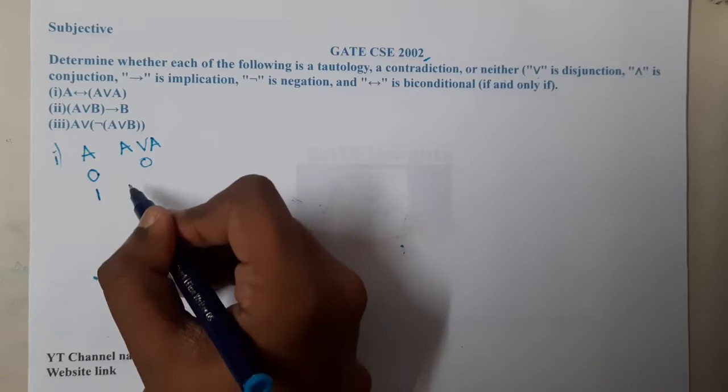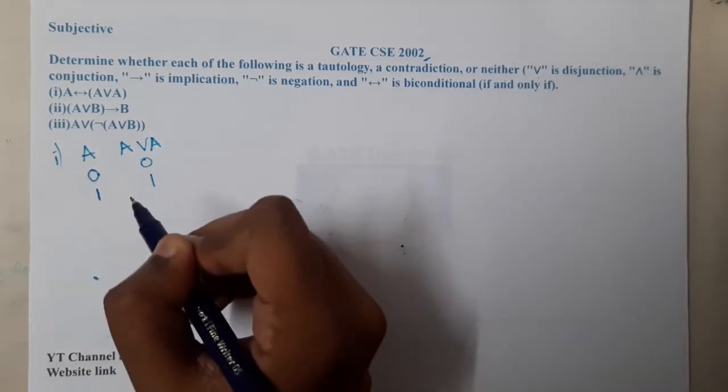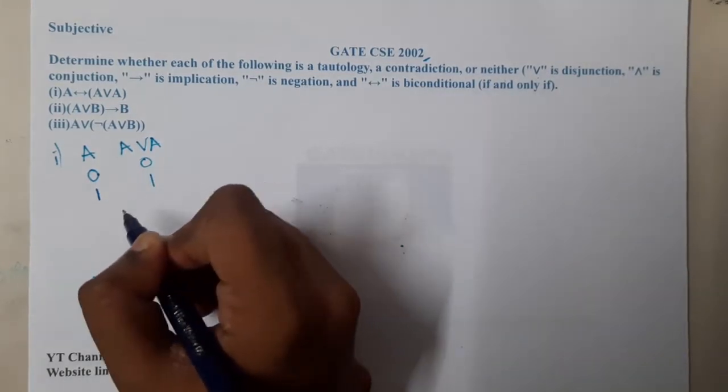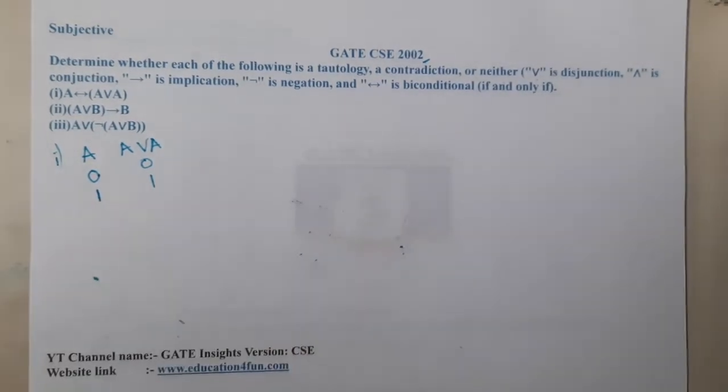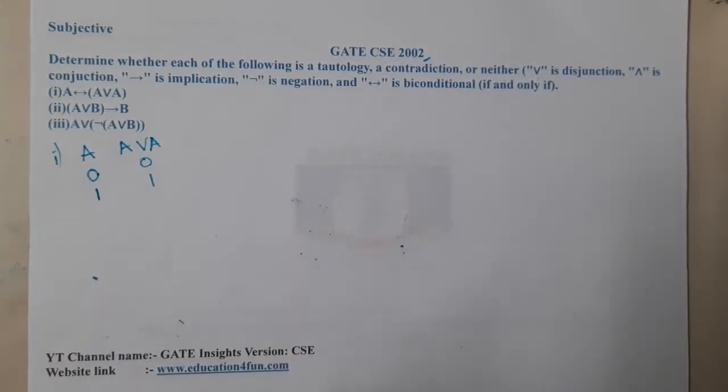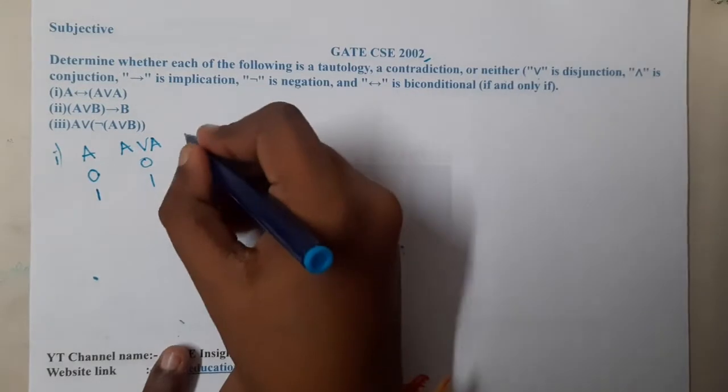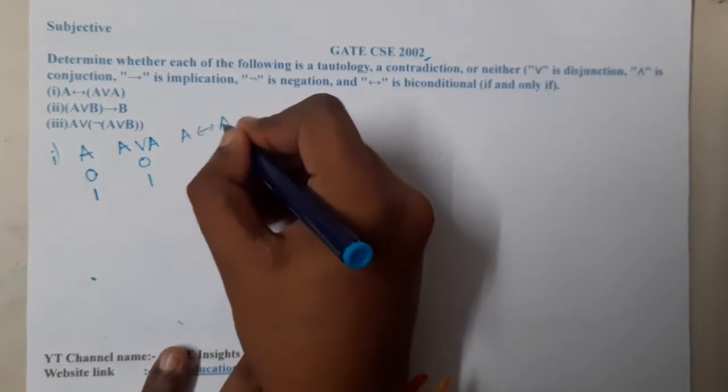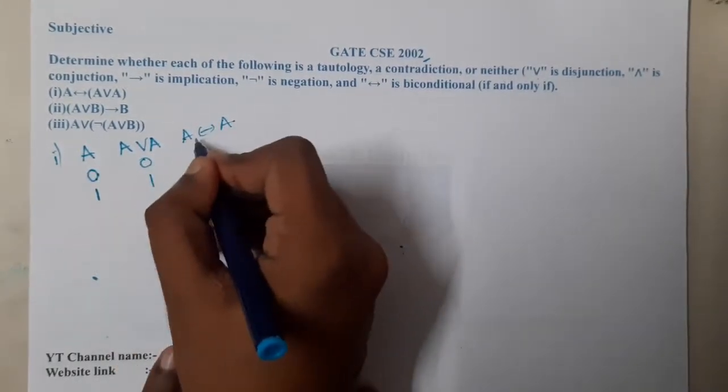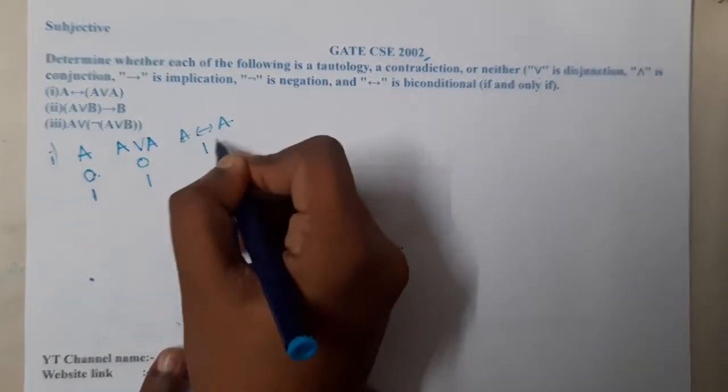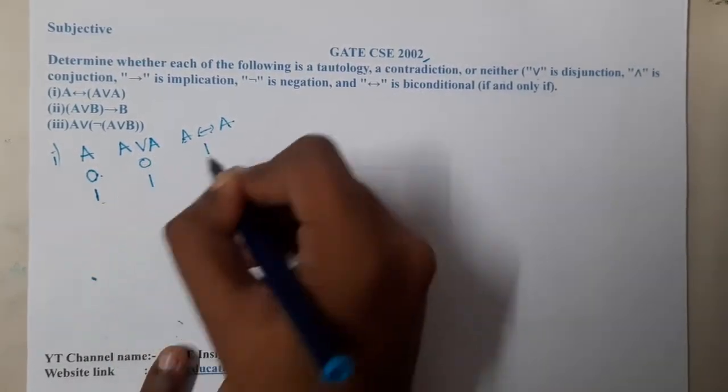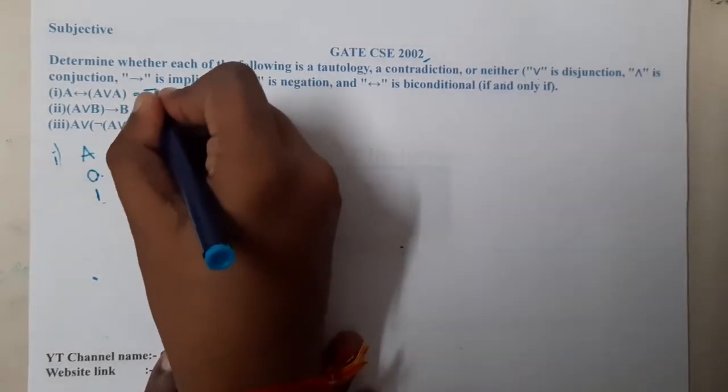Similarly, if I perform a double implication, I think it will be better if I write all the combinations. So it is A, A double implies A. Zero double implies zero, so it is one. One double implies one, it is also one. So basically, the first one is a tautology. It is always true.